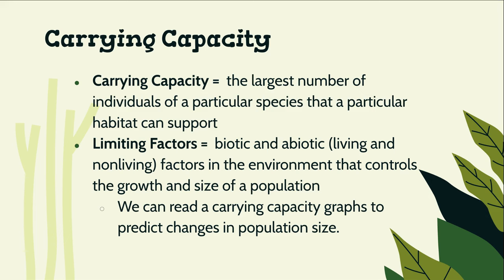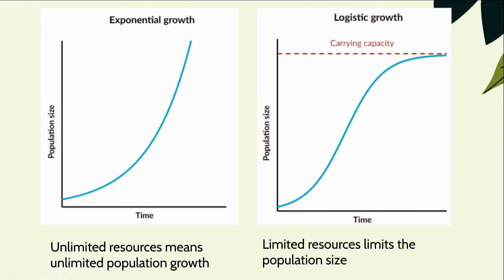We are able to read a carrying capacity graph to predict changes in population size within a habitat. On this slide you will see two graphs. The graph on the left shows exponential growth, meaning there is no cap on the amount of resources organisms can take advantage of. On the x-axis we have time, and on the y-axis we have population size.